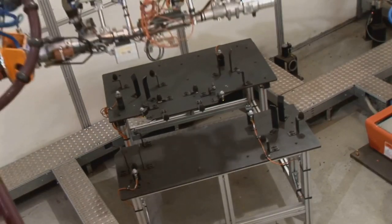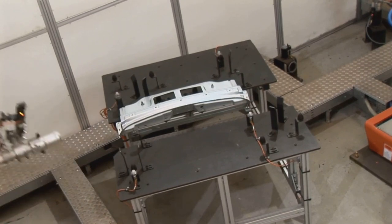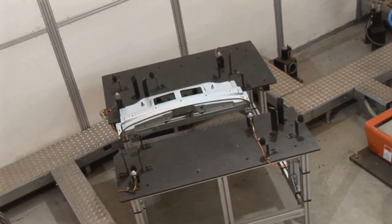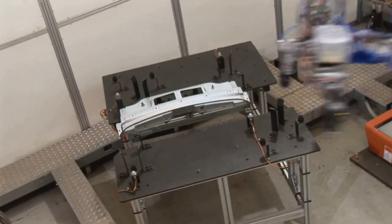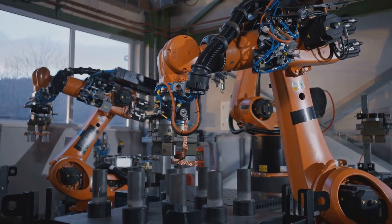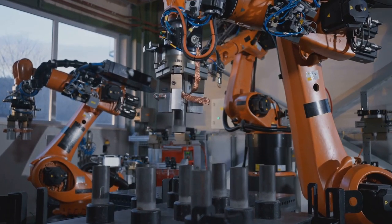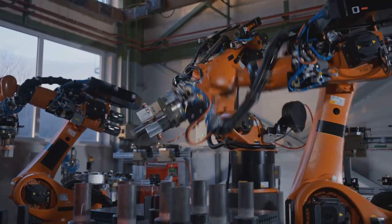In the world of manufacturing, robotics has been steadily taking over tasks traditionally performed by blue-collar workers. The assembly line, once bustling with human activity, is now increasingly populated by precise, tireless robotic arms. They assemble, paint, and inspect products with a level of accuracy and speed that human hands could hardly compete with.